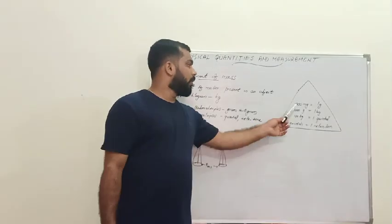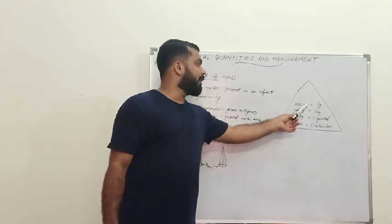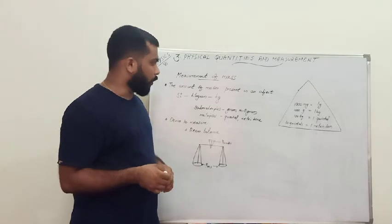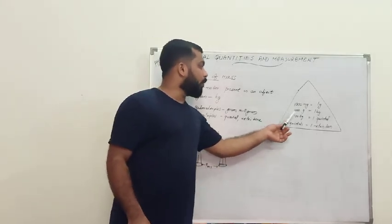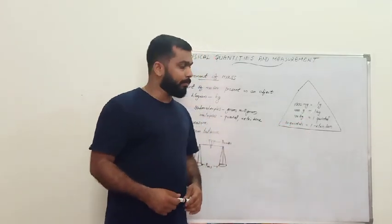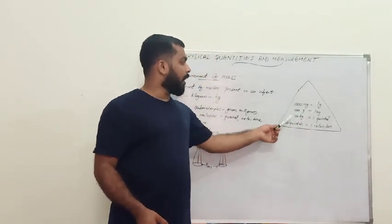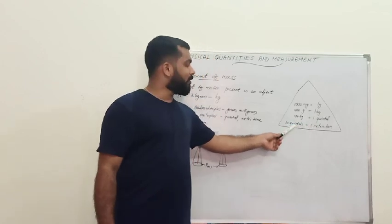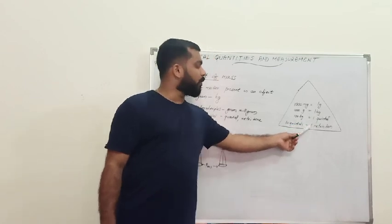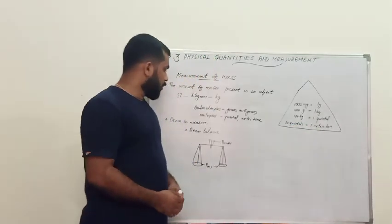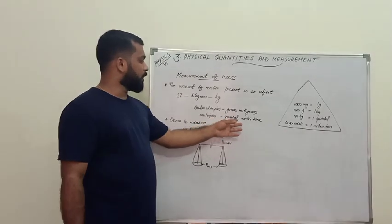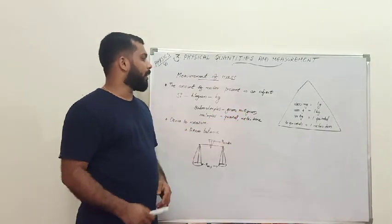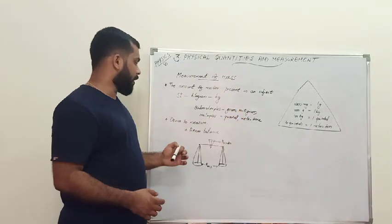The relationship between units: one thousand milligrams equals one gram, one thousand grams equals one kilogram. Then one hundred kilograms equals one quintal, and ten quintals equal one metric ton. So metric ton and quintal are multiples, while gram and milligram are submultiples of the kilogram.